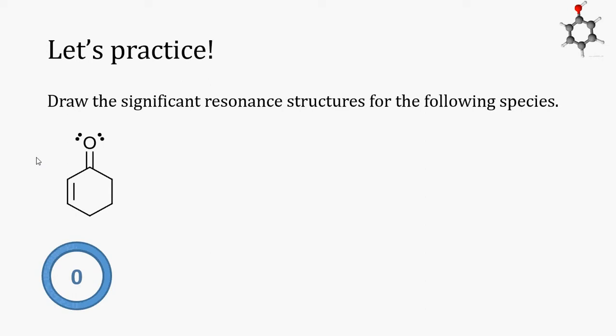The best way to make sure we draw all of the significant resonance structures for a molecule or ion is to look for and use the resonance patterns that we have learned about. This molecule contains one resonance pattern, a carbon-oxygen double bond.